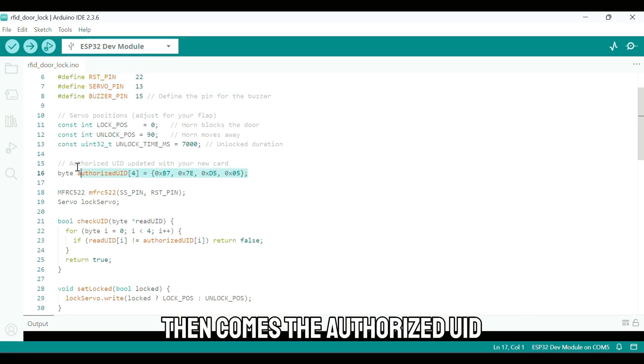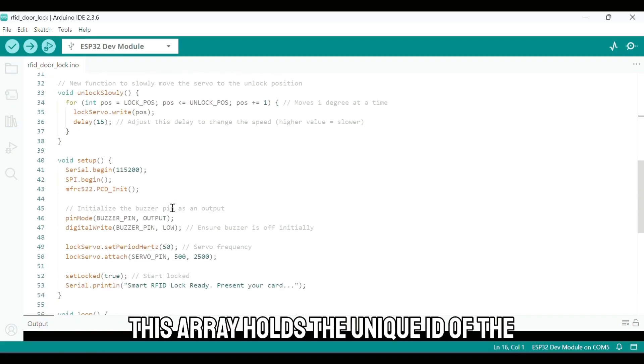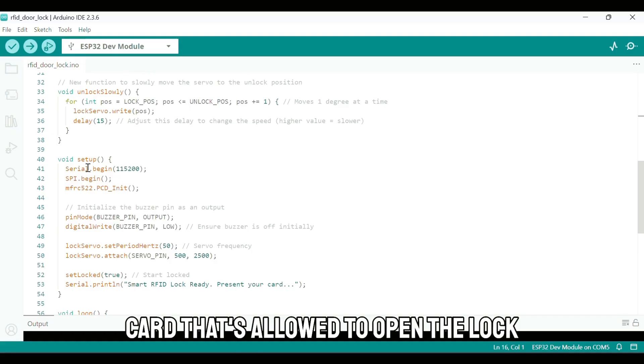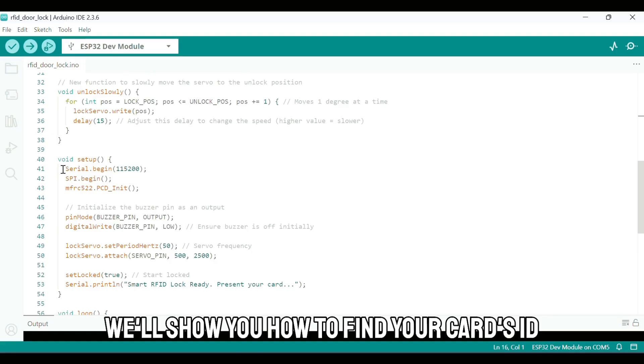Then comes the authorized UID. This is the most important part. This array holds the unique ID of the card that's allowed to open the lock. We'll show you how to find your card's ID in a moment.